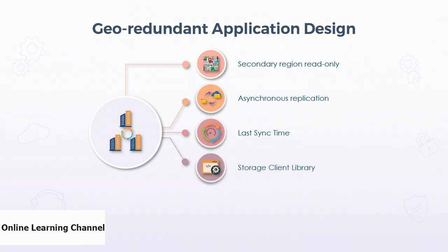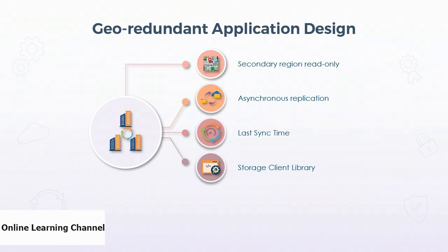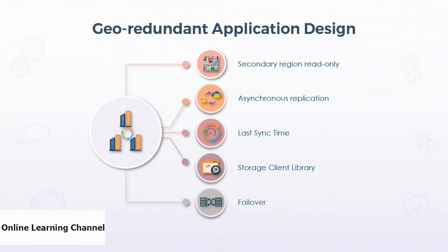The storage client library provides functions for redirecting requests to the secondary region automatically if access to the primary region times out. Initiating an account failover repoints the DNS entries to the secondary region and provides write access to the data. This should be used with caution, especially if the app is built to automatically switch to write-only with data in the secondary region, as failing back can require manual data merging and cause consistency issues.